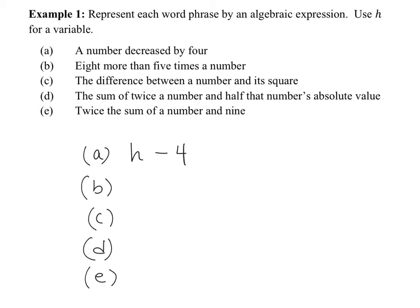Let's discuss part B. The phrase is '8 more than 5 times a number.' Moro explains: '8 more than' means plus 8, and '5 times the number' means 5H. So the answer is 5H plus 8. We're 8 more than 5 times a number — you can think of it as 5H and 8 more. It doesn't matter which way you write it because addition is commutative. But part A does matter — 4 minus H is very different from H minus 4.